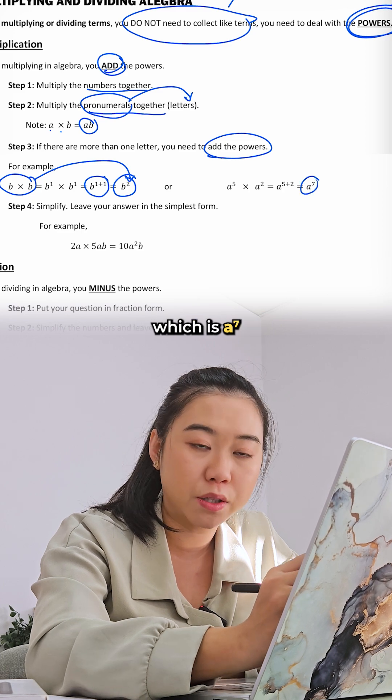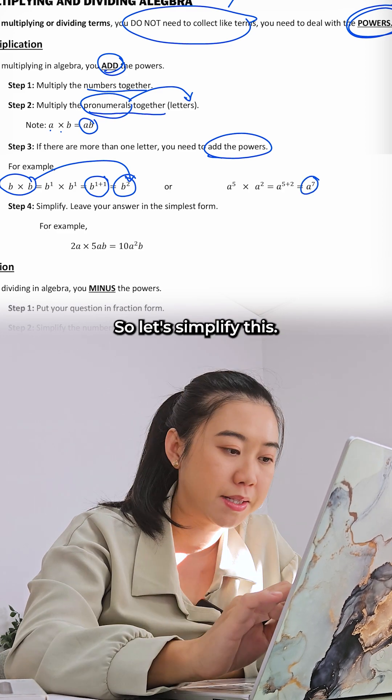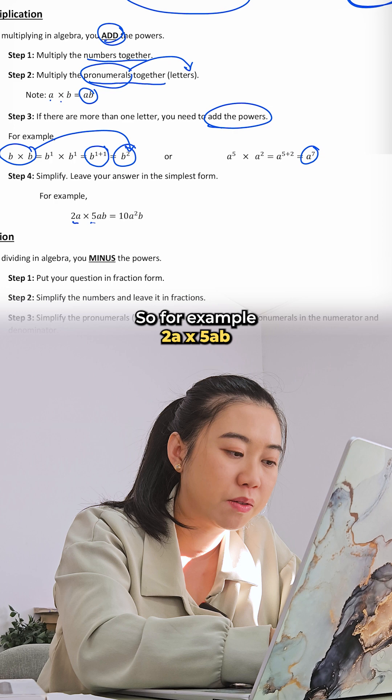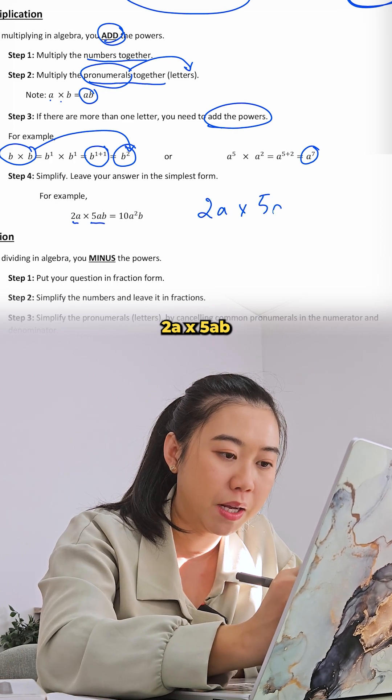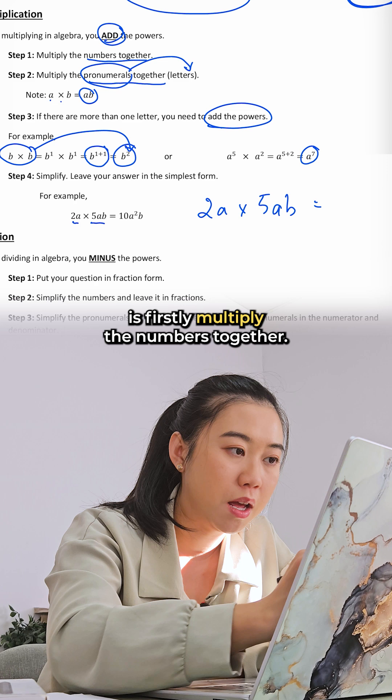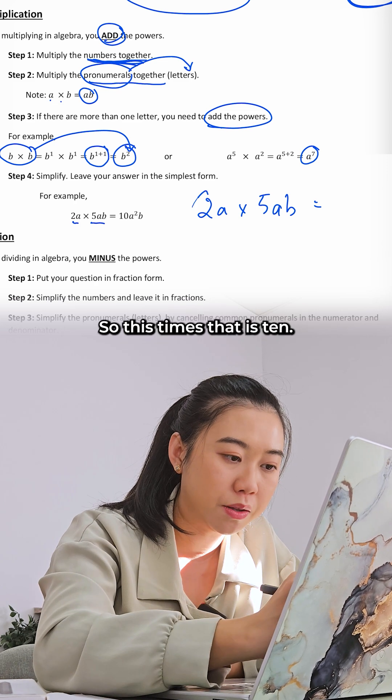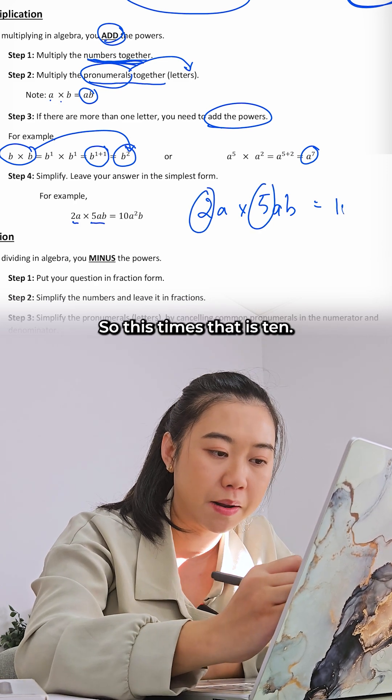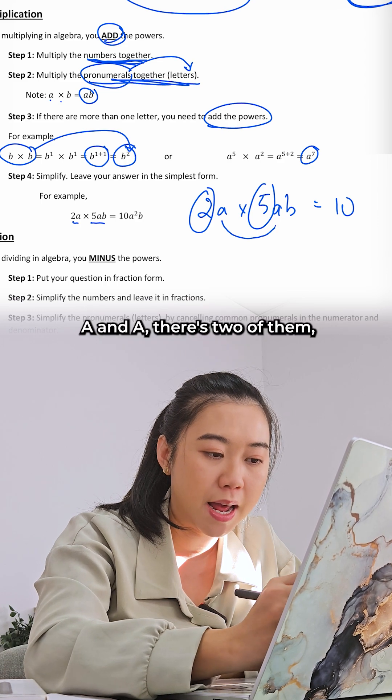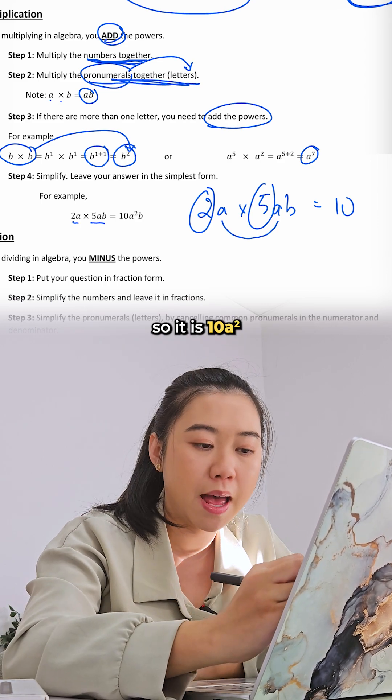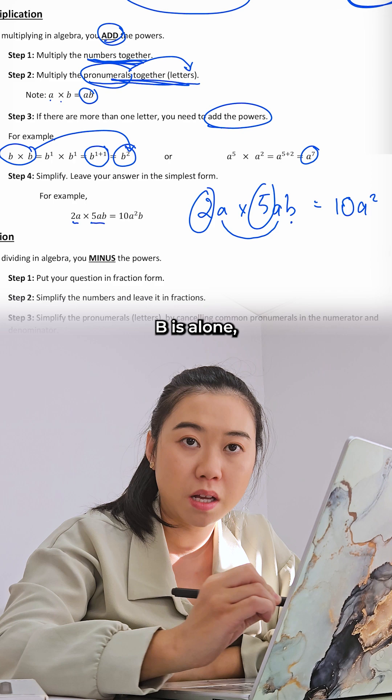Let's simplify this. For example, 2a times 5ab. What you're going to do is firstly multiply the numbers together, so 2 times 5 is 10. Then you do the pronumerals, which is the letters. You just add them together. a and a, there's two of them, so it is a squared. b is alone, so you just write b at the end.